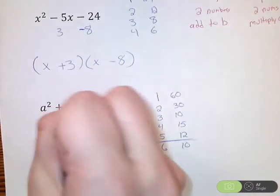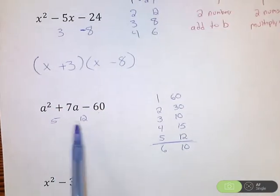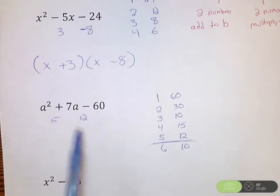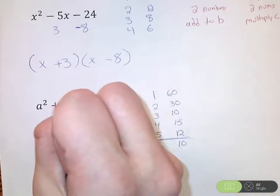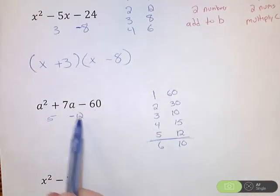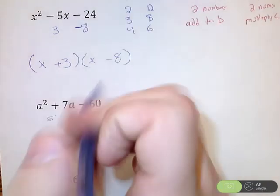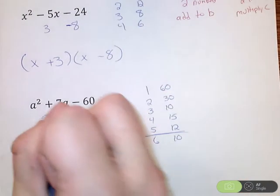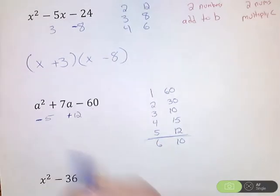So 5 times 12 will get me 60. I've got to figure out how can I add 5 and 12 to get a positive 7. Well, if I have a positive 5 and a negative 12, 5 minus 12, well, that's negative 7, so that's not going to work. So maybe leave that positive and make the 5 negative. So negative 5 plus 12, that is positive 7.